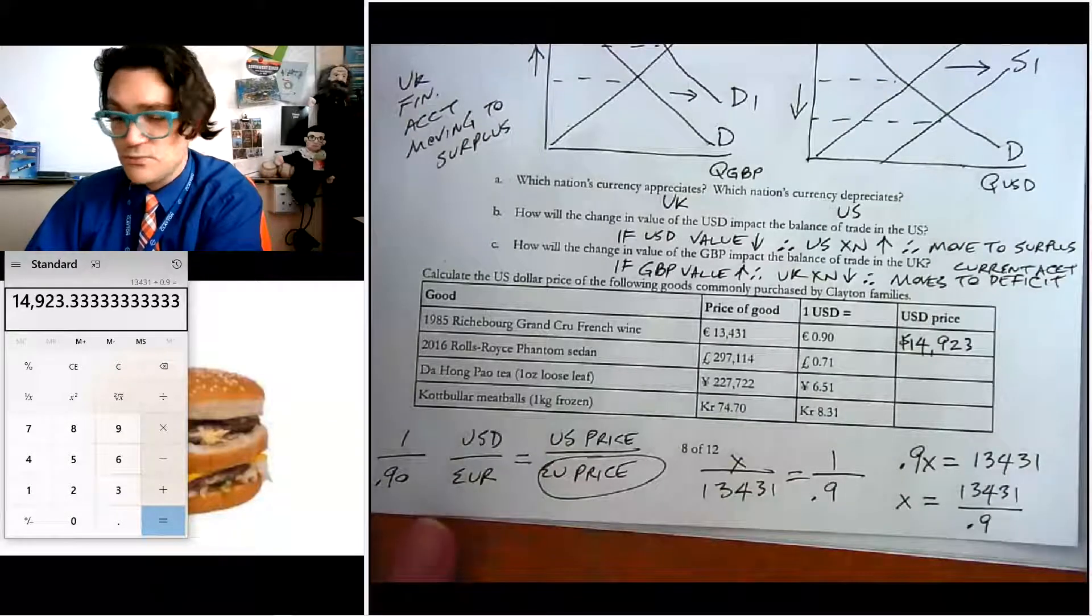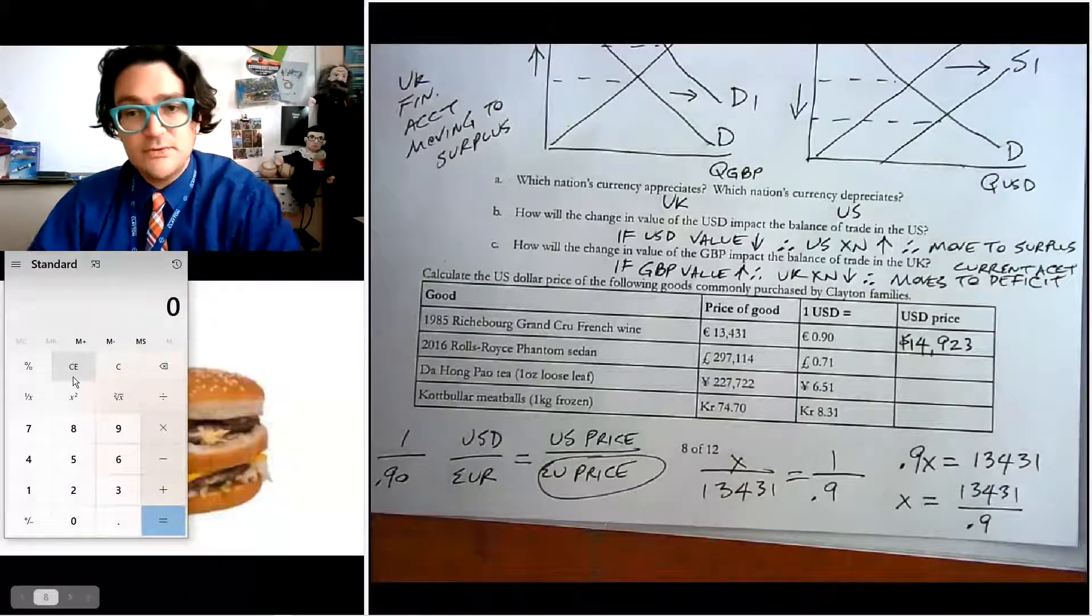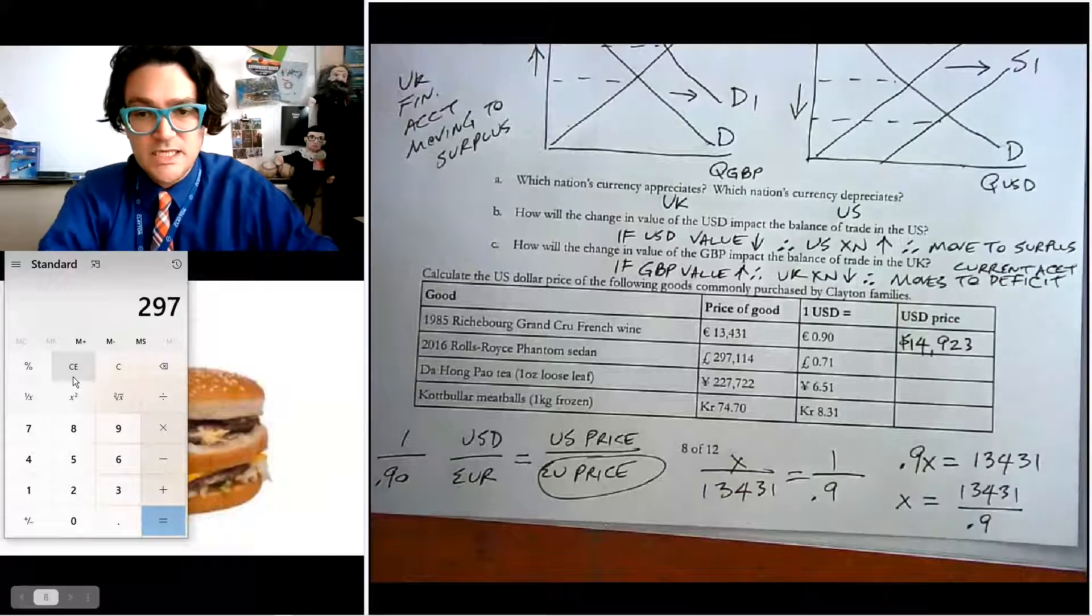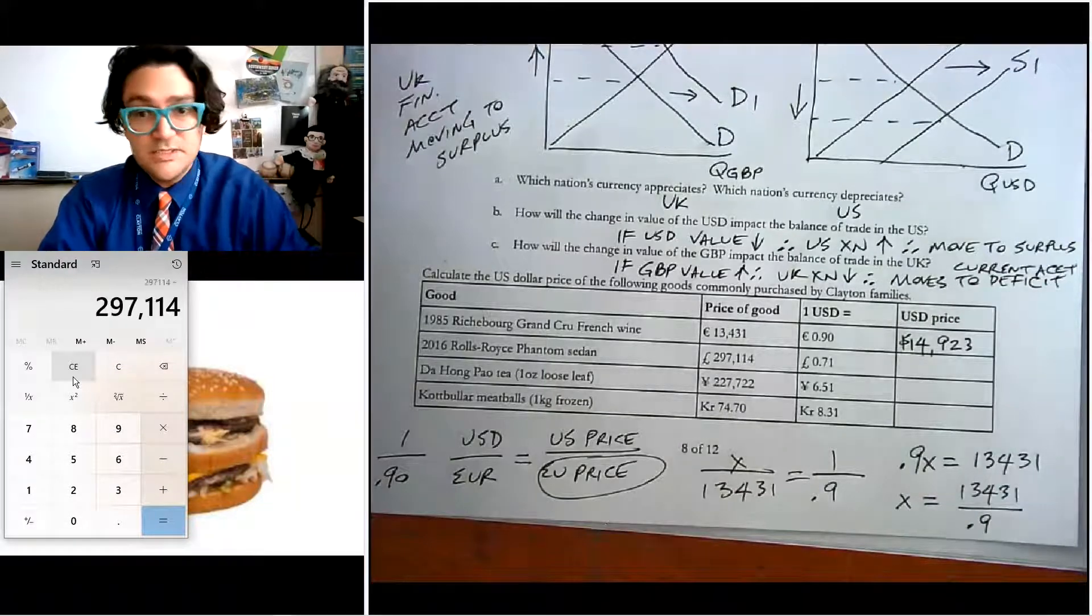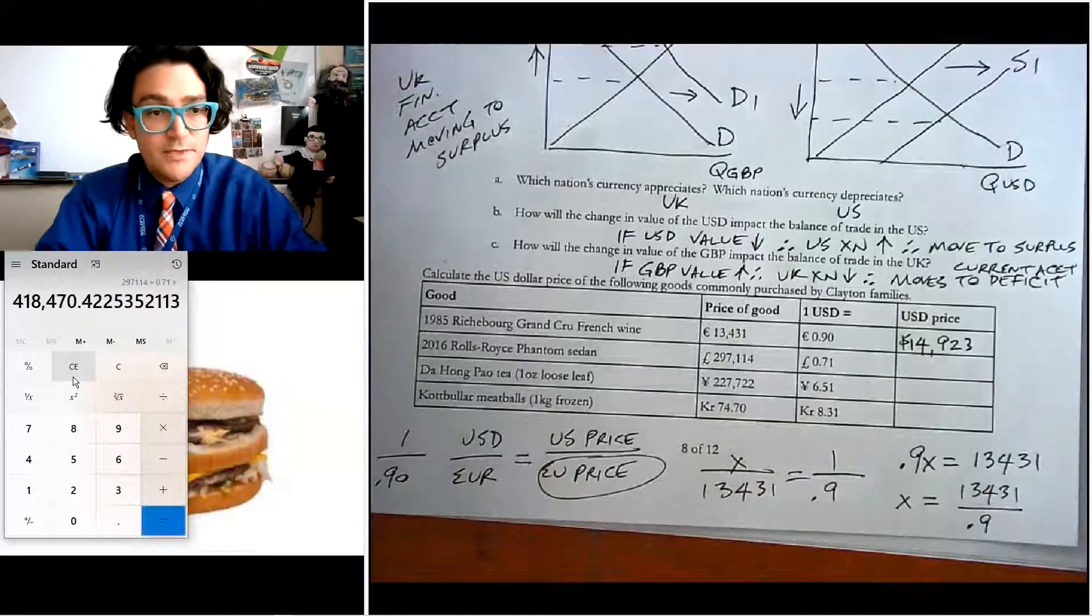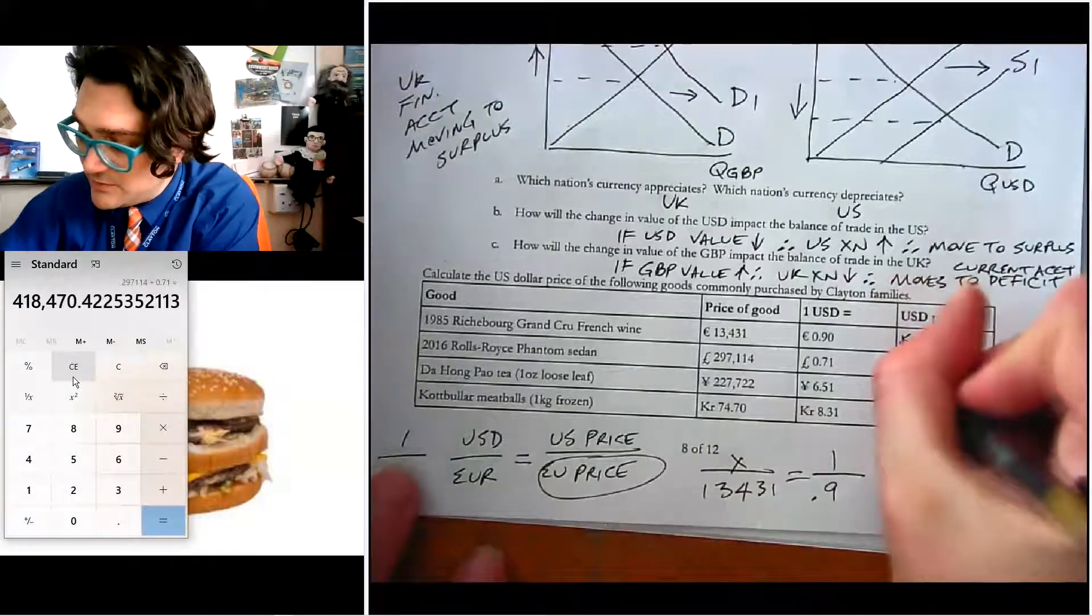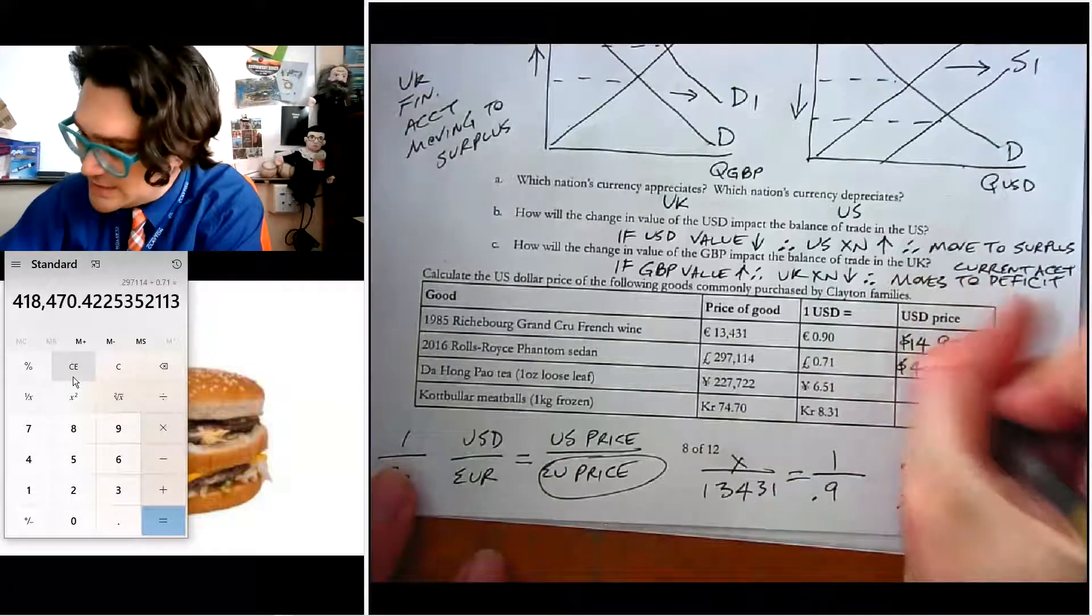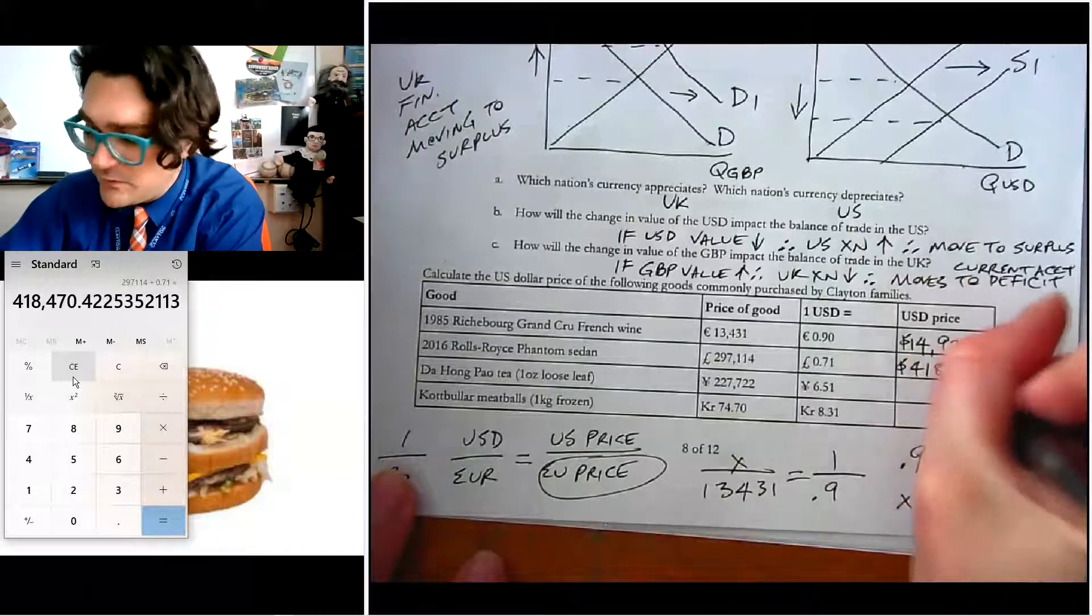The next one is a Rolls Royce Phantom. So let's see how much that would cost us. 297,114 pounds divided by 0.71. And so that would cost us $418,470.